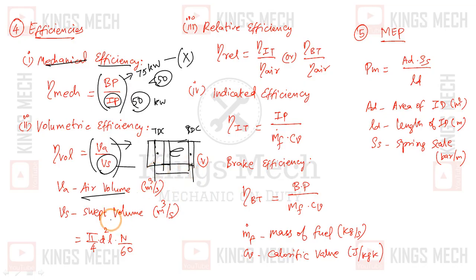The volume is called swept volume, calculated as pi by 4 d squared L times n by 60, where n is the speed in RPM. We divide by 60 to convert rotations per minute to rotations per second.